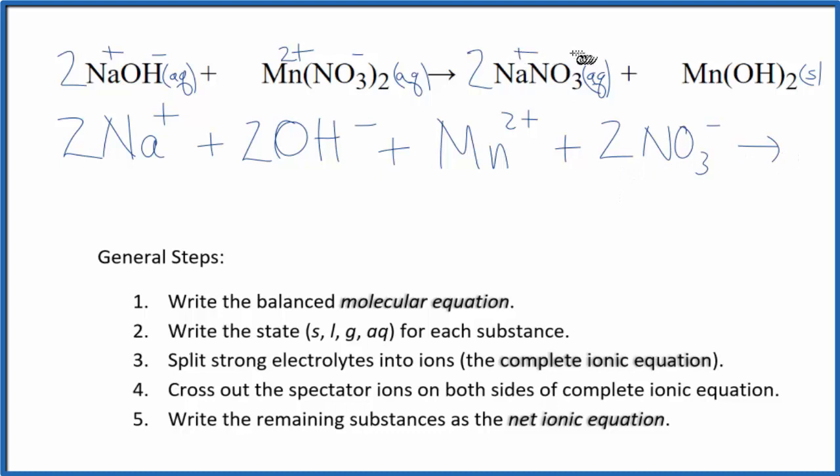And those are the reactants in our net ionic equation. And the products will have 2 sodium ions and then 2 nitrate ions. The manganese hydroxide, manganese 2 hydroxide, that is a solid. So we're not going to split that apart, we'll keep that together. And this is our complete ionic equation.